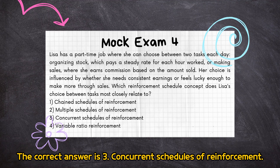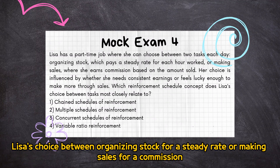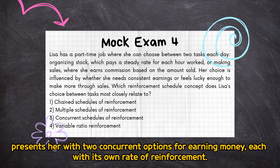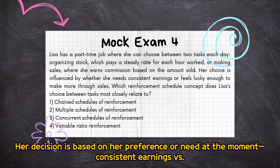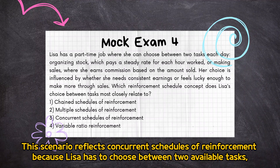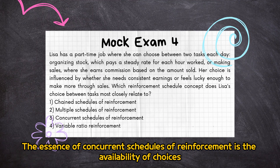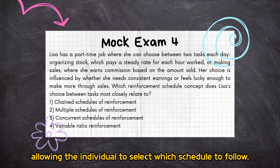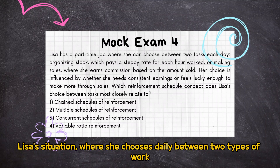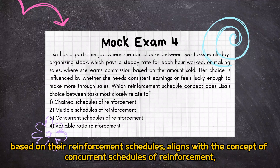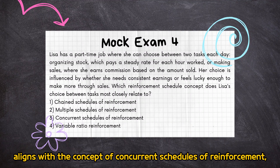The correct answer is 3: concurrent schedules of reinforcement. Lisa's choice between organizing stock for a steady rate or making sales for a commission presents her with two concurrent options for earning money, each with its own rate of reinforcement. Her decision is based on her preference or need at the moment — consistent earnings or the potential for higher earnings through sales. This scenario reflects concurrent schedules of reinforcement because Lisa has to choose between two available tasks, each with its own reinforcement plan.